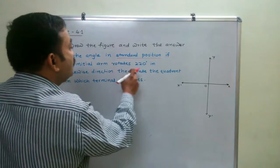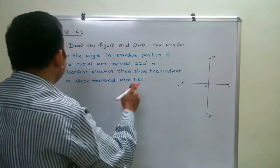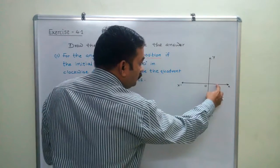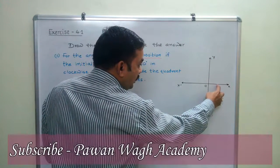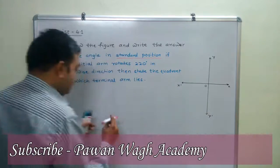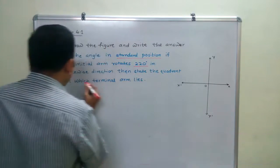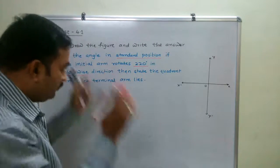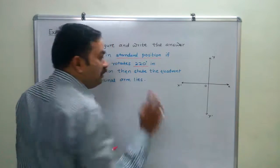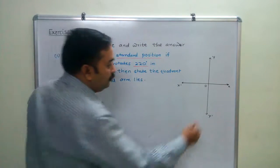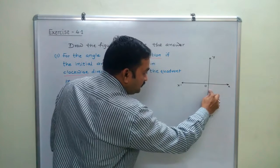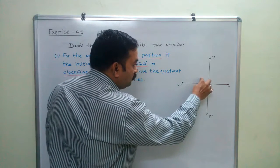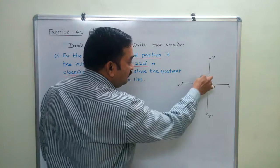The initial arm rotates 220 degrees in the clockwise direction. We should keep in mind: 220 degrees clockwise. Now, going clockwise from the positive x-axis — at 90 degrees we reach the negative y-axis, at 180 degrees the negative x-axis. So 220 degrees will land somewhere past 180 degrees.